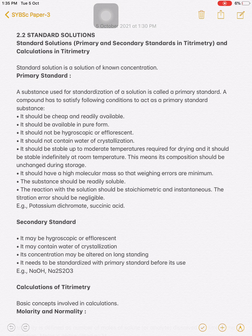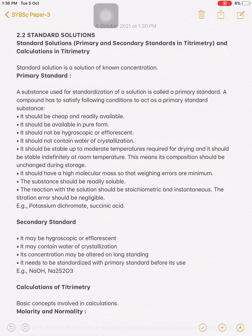It should be stable up to the moderate temperature required for drying, and it should be stable indefinitely at room temperature — meaning its composition should be unchanged during storage. It should have a high molecular mass so that weighing errors are minimized. The substance should be readily soluble, and the reaction with the solution should be stoichiometric and instantaneous. The titration error should be negligible. Examples of primary standard substances are potassium dichromate and succinic acid.